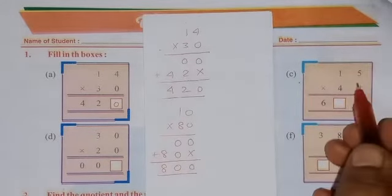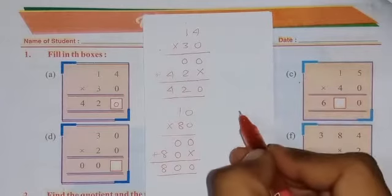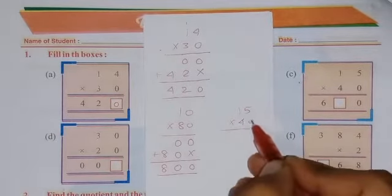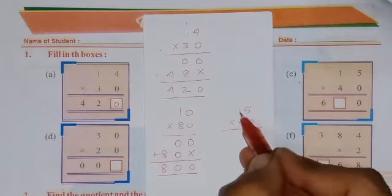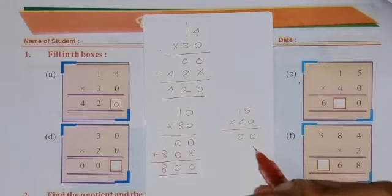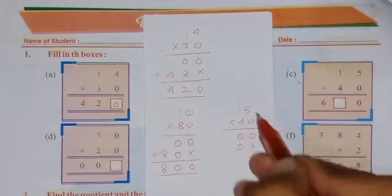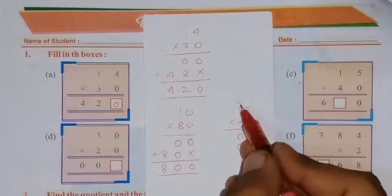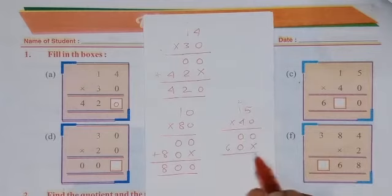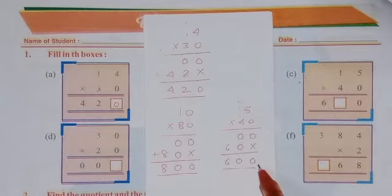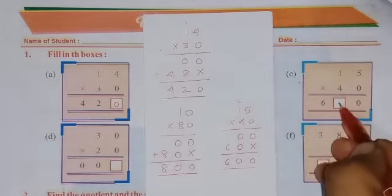See the next question number 3. Here is number given: 15 multiply by 40. So 0 into 5 is 0, 0 into 1 again 0. 4 5's are 20, so 0 carry over 2. Now 4 1's are 4, 4 plus 2 is 6. So the answer will be 0, 0, 6. It means 600. So here will be 0.